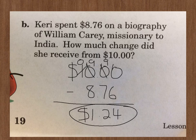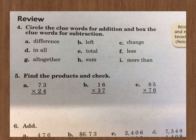Let's look at the back side, where it says review. And the directions tell us to circle the clue words for addition and box the clue words for subtraction. Remember, a box has four corners. So when we box them, it's got to look like this. And a circle shouldn't have any corners. Okay, the word difference. Is that addition? Or is that subtraction? Difference would be subtraction, so we need to box this word.